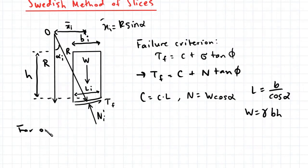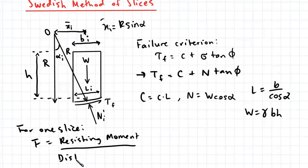If we look at a single slice, the factor of safety F is equal to the resisting moment divided by the disturbing moment. This is equal to TF multiplied by this lever arm R divided by W multiplied by X, where X is R sine alpha. So W multiplied by R sine alpha.